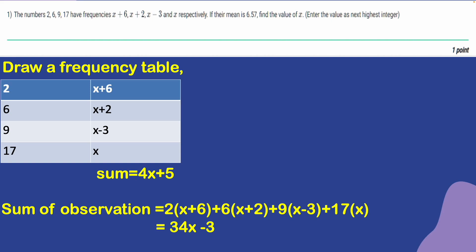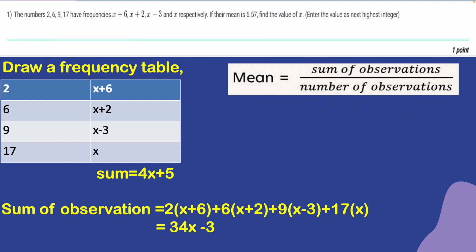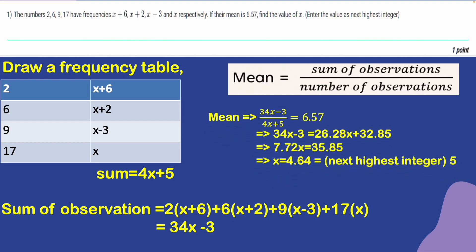The sum of frequencies happens to be 4x plus 5, and the sum of observations is found by multiplying each number by its frequency and adding them all. Mean equals sum of observations divided by number of observations, so mean equals 34x minus 3 divided by 4x plus 5, which equals 6.57. After calculations, x equals 4.64, so the next highest integer is 5. The correct answer is 5.